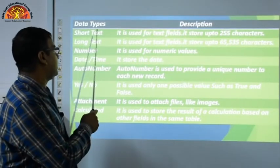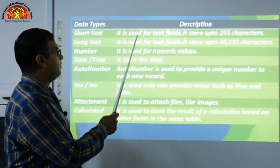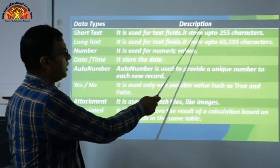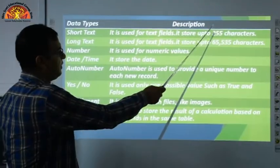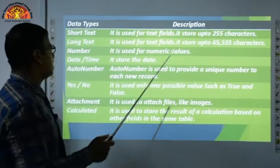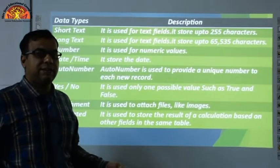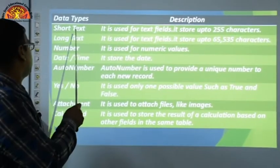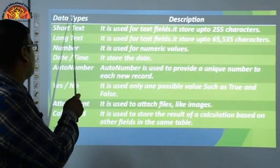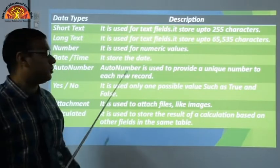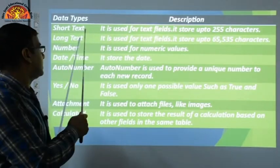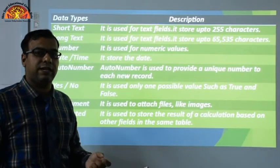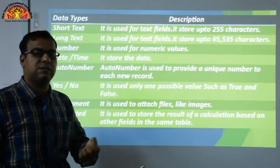First is Short Text. It is used for text fields and stores up to 255 characters. If you set a column's data type as Short Text, it will store character-type data — for example, a student's name is character type, so you would choose Short Text.